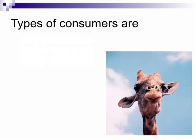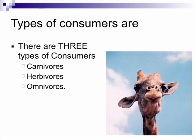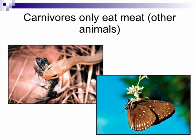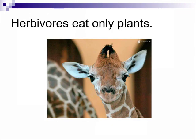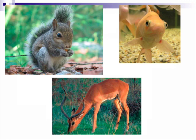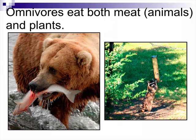There are three types of consumers: carnivores, herbivores, and omnivores. Carnivores only eat meat, which is other animals — here we have a snake, and in another picture a spider eating a moth. Herbivores only eat plants, so they're the vegetarians of the animal world.